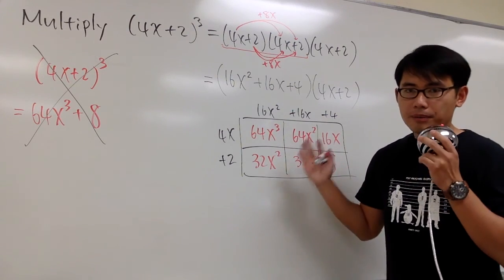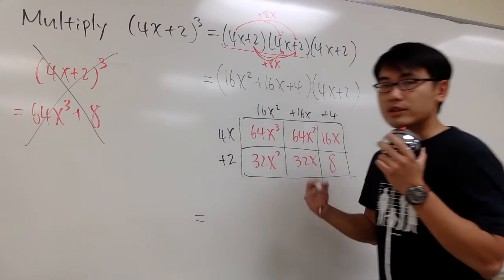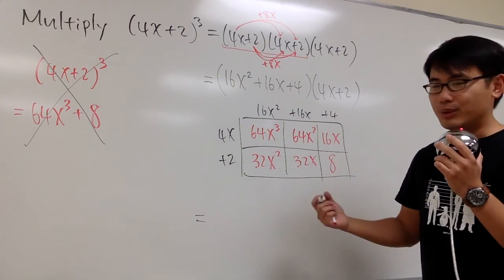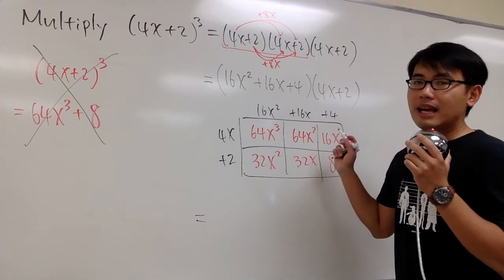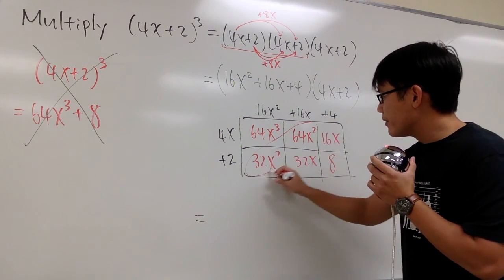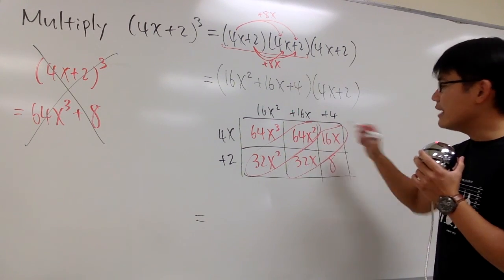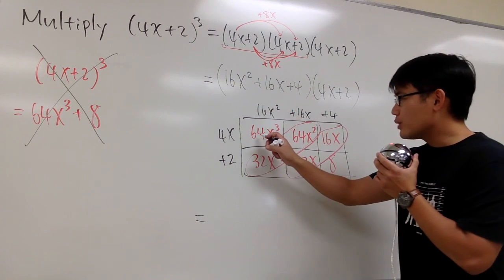For the box method, it's so much more organized, and now we can write down the answer. We still have to combine the terms, and to do that, it usually happens on the diagonals. As you can see, they are both the x squared terms, and likewise for this, they are both the x terms. And then for this one, it's just 64x to the 3rd power, nothing else has an x to the 3rd power.